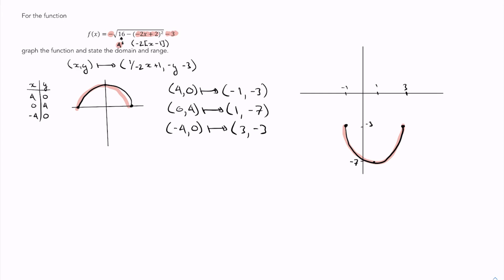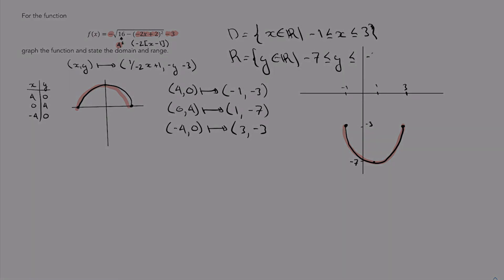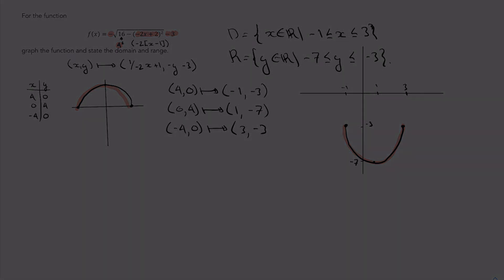Our domain in this case is going to be all real numbers such that x is between -1 and 3, and the range is going to be all real numbers such that y is between -7 and -3. There we have it.